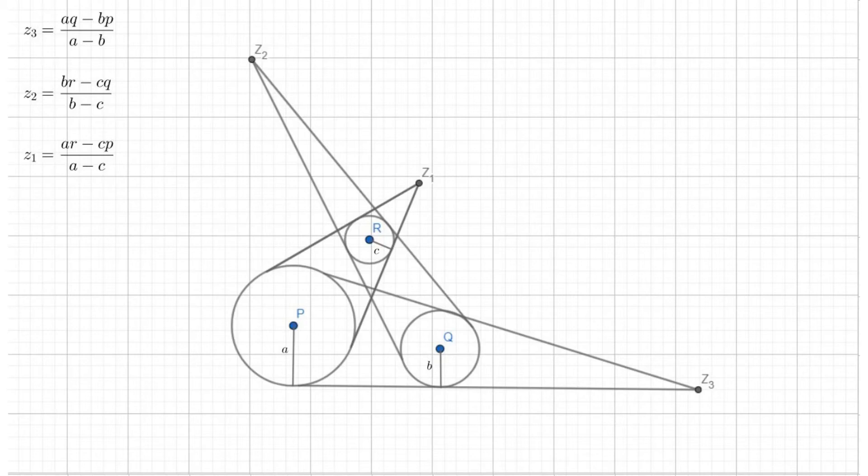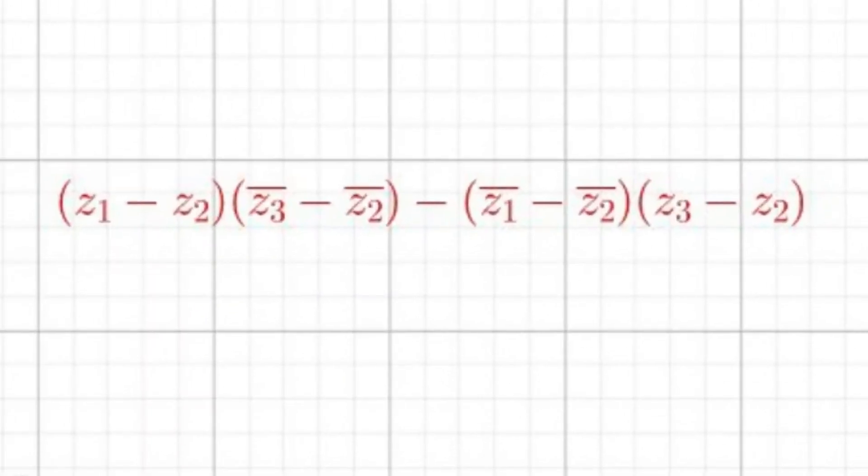Now that we have all our Zs written in more manageable terms, we can start thinking about how to prove their collinearity. We learned that if we use this expression involving each point and its conjugate and prove it equals zero, the three points must be collinear. We could start plugging and chugging here, but with our points in their current form, we'd be here a while and it doesn't look like much fun.